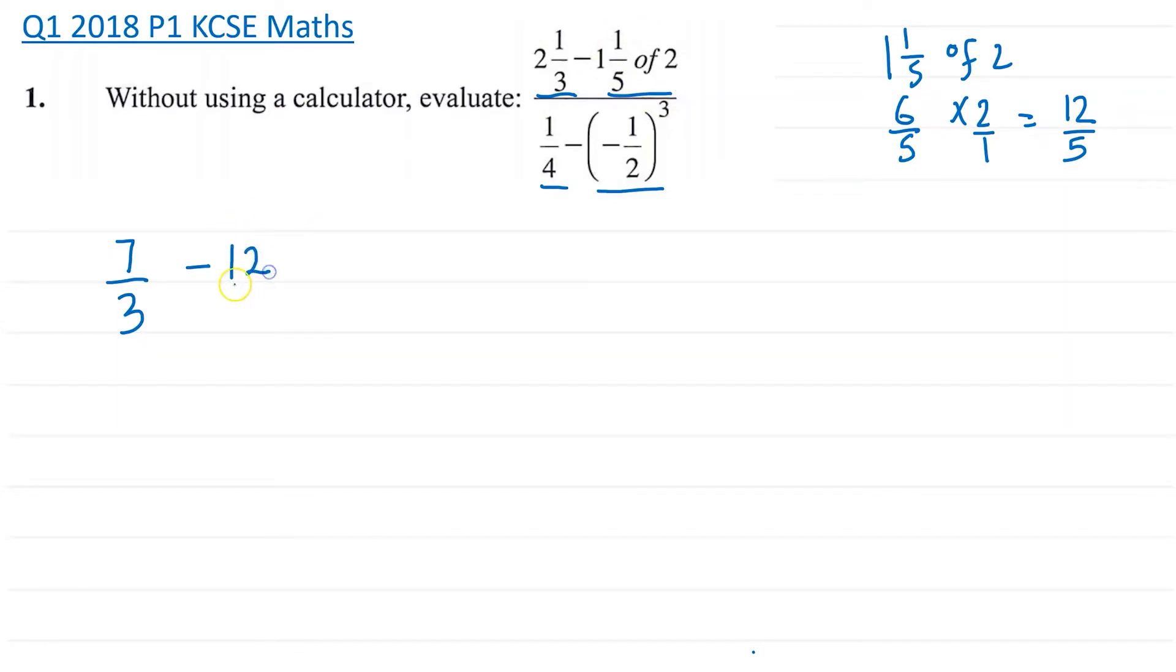So everything divided by the denominator, which is 1/4, and then take away this part here.